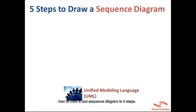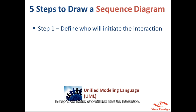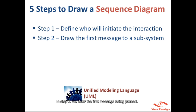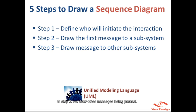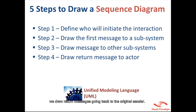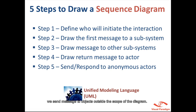Hi, this video will show you how to draw a UML sequence diagram in five steps. In step 1, we define who will kick-start the interaction. In step 2, we draw the first message being passed. In step 3, we draw other messages being passed. In step 4, we draw return messages going back to the original sender. And in step 5, we send messages to objects outside the scope of the diagram.